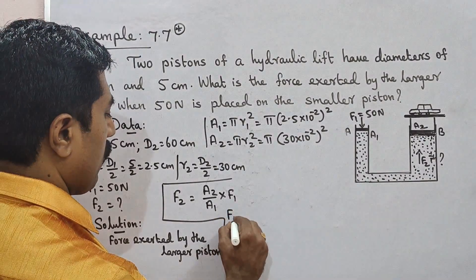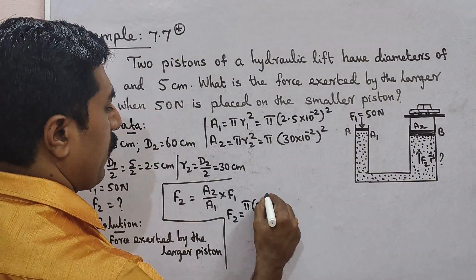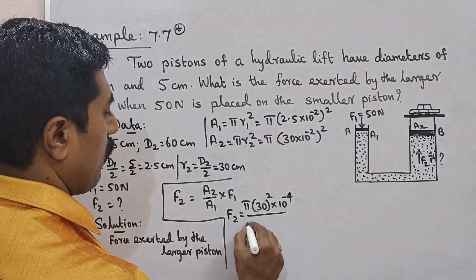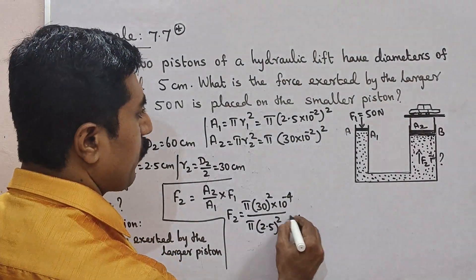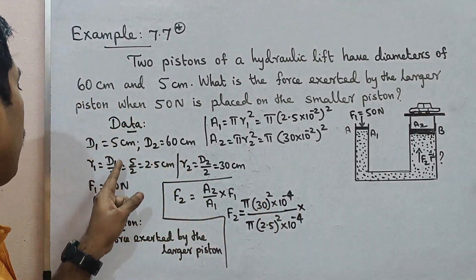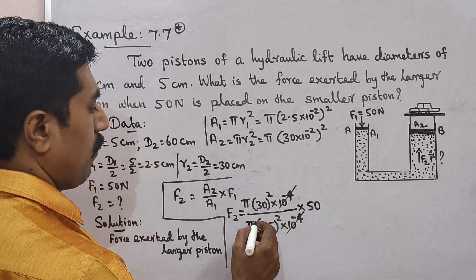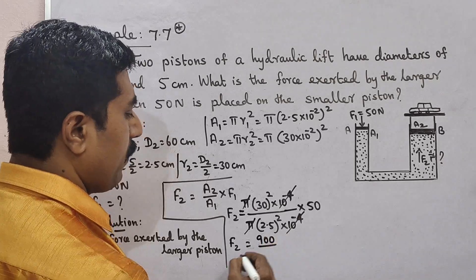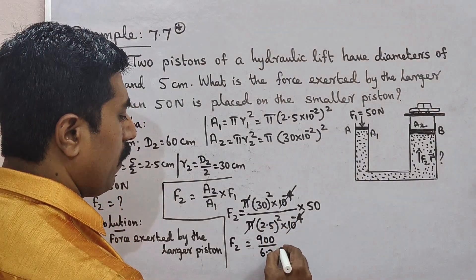So F2 equals A2 by A1 into F1. A2 equals pi into 30 into 10 power minus 2 whole squared, and A1 equals pi into 2.5 into 10 power minus 2 whole squared. The pi and 10 power minus 4 terms cancel. F1 is 50 Newton. So F2 equals 30 squared divided by 2.5 squared into 50, which is 900 divided by 6.25 into 50.